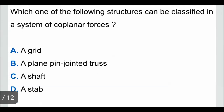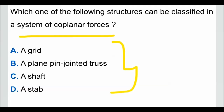Question 5: which one of the following structures can be classified in a system of coplanar forces? A system of coplanar forces means all the forces are acting in a single plane — the forces may be concurrent, non-concurrent, parallel, or non-parallel. The four options are: option A, grid; option B, a plane pin-jointed truss; option C, a shaft; option D, a slab. The correct answer is option B — a plane pin-jointed truss — as in this structure all forces act in a single plane.